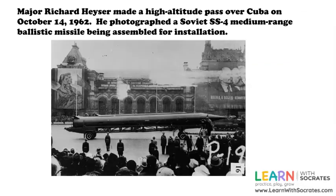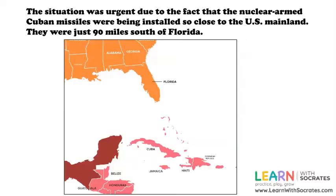Major Richard Heiser made a high-altitude pass over Cuba on October 14th, 1962. He photographed a Soviet SS-4 medium-range ballistic missile being assembled for installation. The situation was urgent due to the fact that the nuclear-armed Cuban missiles were being installed so close to the U.S. mainland.